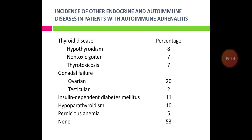Looking at the incidence of other endocrine and autoimmune diseases in patients with autoimmune adrenitis: 8% have hypothyroidism, 7% have non-toxic goiter and thyrotoxicosis, 20% have ovarian failure, 2% testicular failure, 11% insulin-dependent diabetes mellitus, 10% hypoparathyroidism, 5% pernicious anemia. More than 50% of autoimmune adrenitis cases are not associated with any other disease.